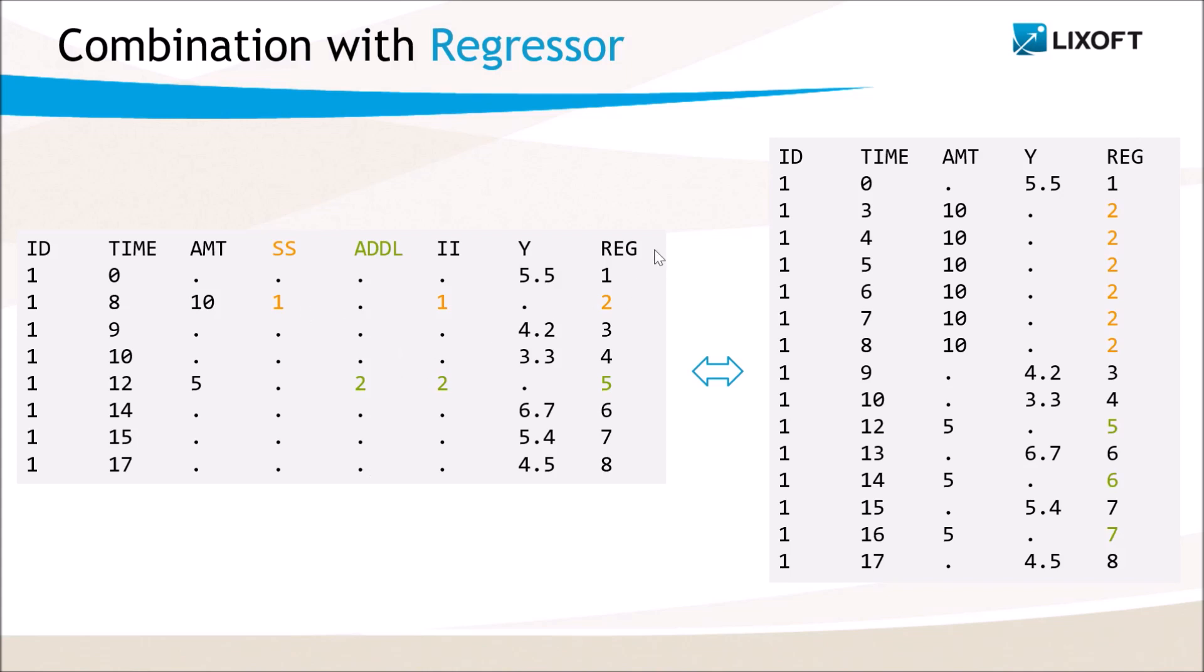We can see on the equivalent dataset on the right that lines added due to the steady state columns get the same regressor value as the line with the steady state statement, here too.